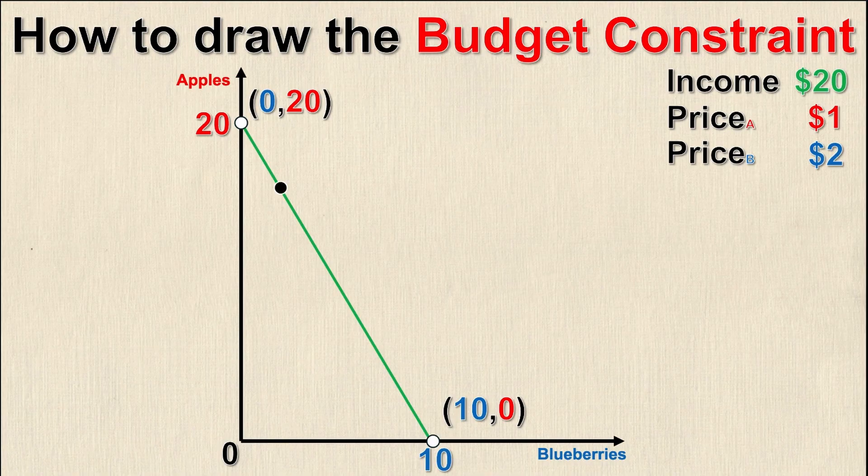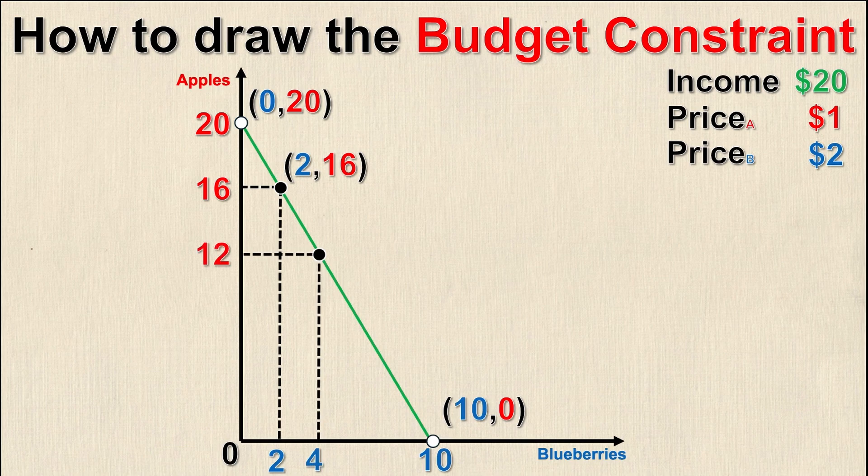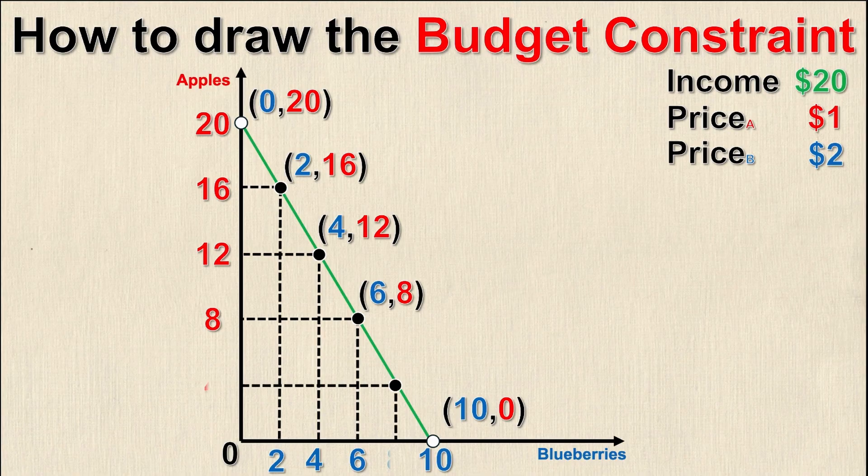However, there's technically infinite points on this line because it is linear. For example, I could have this value where with my $20 I can purchase 2 units of blueberries and 16 units of apples, or 4 units of blueberries and 12 units of apples, and so on for all these points.